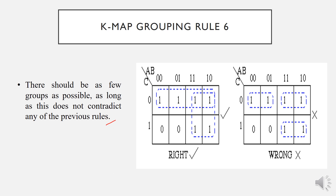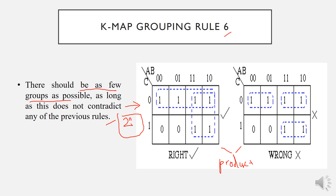Rule six: there should be as few groups as possible. This is why we must find the largest groups based on the two-to-the-power-of-n rule — fewer groups means fewer product terms, which results in the most simplified Boolean expression. With optimal grouping we get two terms; with suboptimal grouping we get three terms. We must always aim for the minimum number of groups by maximizing the size of each group.